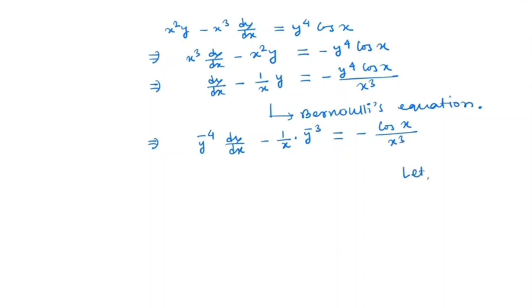Now here let y to the power minus 3 equal u, that implies minus 3 y to the minus 4 dy/dx is equal to du/dx. So we get y to the power minus 4 dy/dx is equal to minus 1 by 3 du/dx.